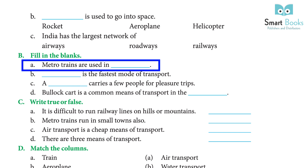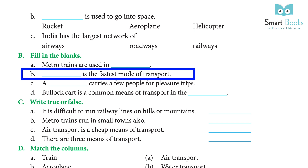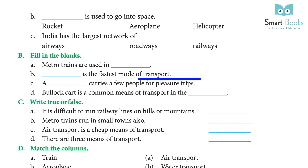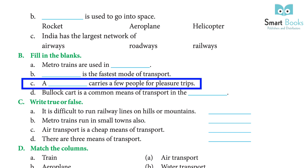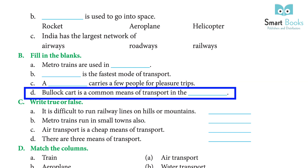Exercise B — Fill in the blanks. (a) Metro trains are used in dash. Answer: metropolitan cities. (b) Dash is the fastest mode of transport. Answer: air transport. (c) A dash carries a few people for pleasure trips. Answer: cruise.